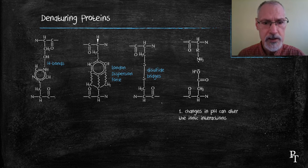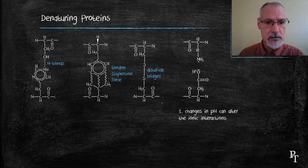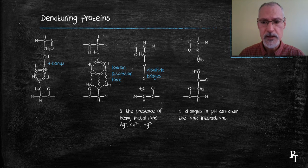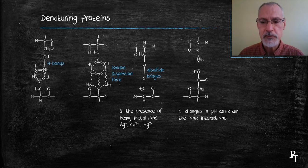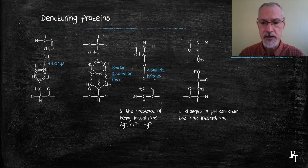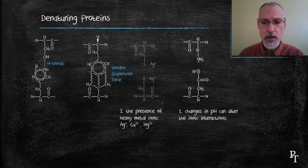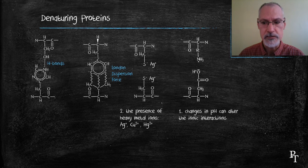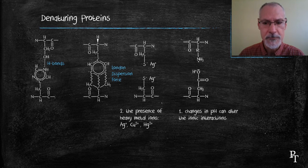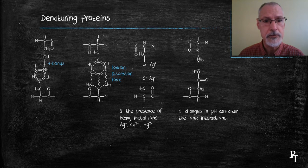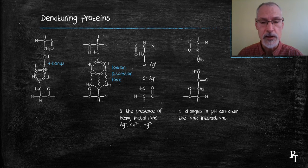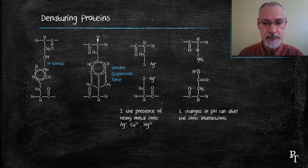Where we have the disulfide bridge, cysteine amino acids join together. The presence of heavy metals can interfere with the formation of those disulfide bridges, replacing the bond with an ionic interaction with silver or our heavy metal. This too can lead to unpinning and unfolding of our protein and thereby cause it not to function.